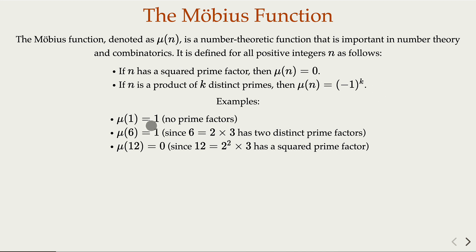For the special value 1 — no prime factors — μ(1) = 1. For 6 = 2×3, two prime factors, μ(6) = 1. For 12, because there's a square in the prime factorization, μ(12) = 0.